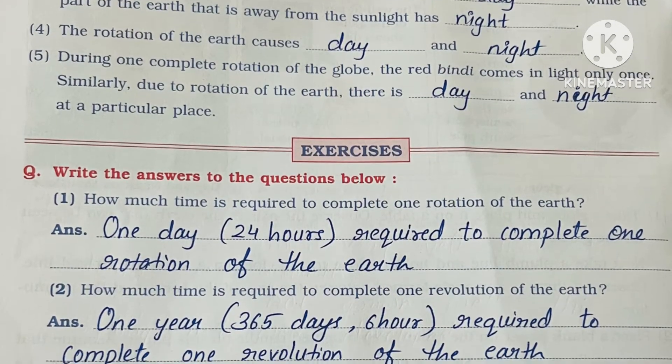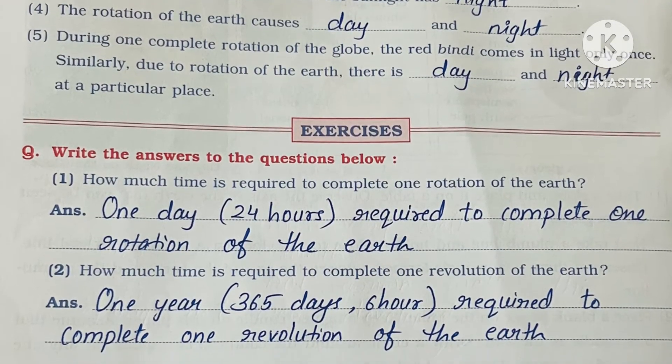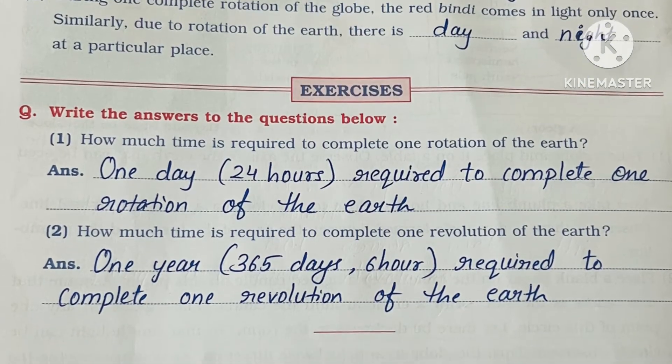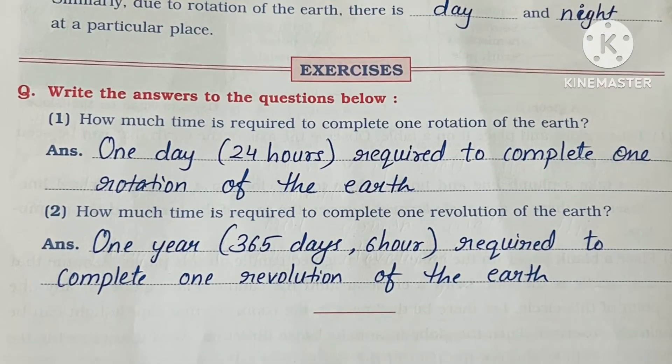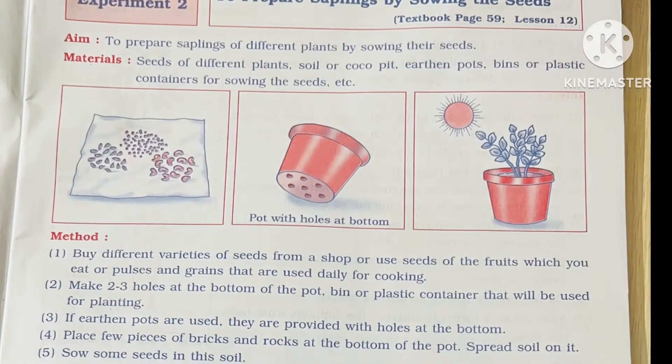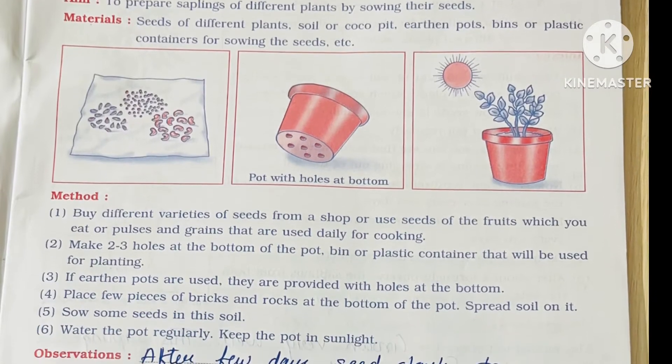It takes 24 hours to complete one rotation, and revolution takes 365 days. This is the second experiment: to prepare the sampling by sowing the seeds.